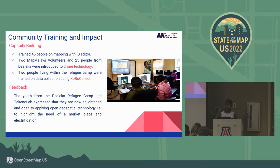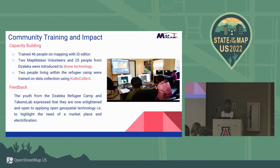We trained 46 people on mapping with iD Editor — two of our volunteers and 25 people from the camp, who come from different countries and are living at the camp. They were introduced to drone technology; my partner offered training and classes on how drones work for the refugees. Two more people were trained on data collection using KoboCollect. Their feedback was that they were enlightened on how they can help their communities. They mentioned the need for a marketplace and the need for electrification around the camp, and said they're going to use OSM to highlight those needs.